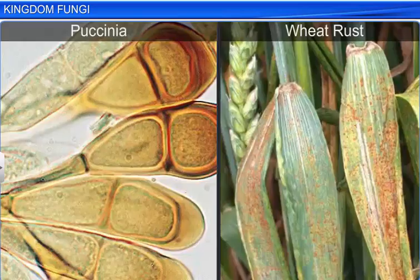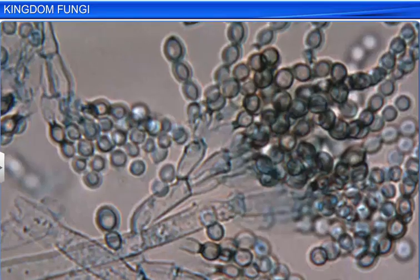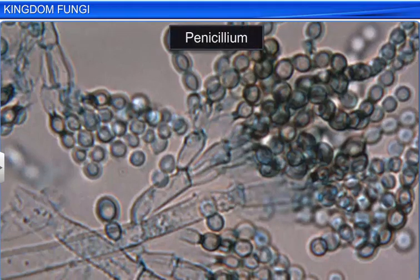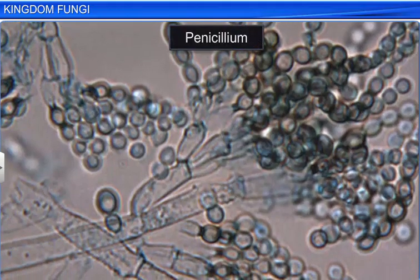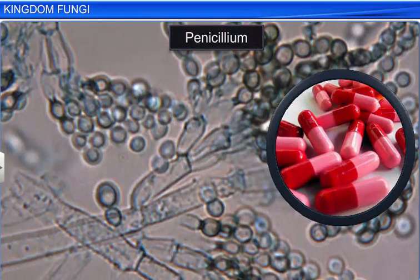While there are some fungi, like Puccinia, that can cause diseases like wheat rust in plants, there are also some, like Penicillium, that provide us with antibiotics.